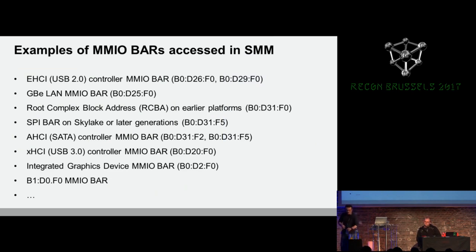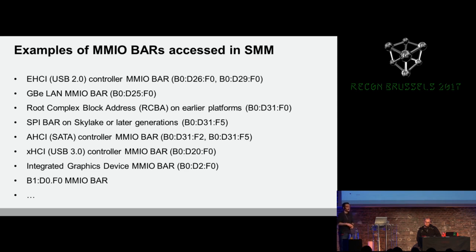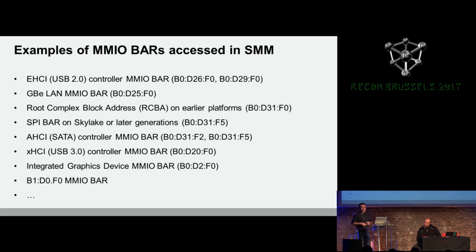What we've observed in multiple types of firmware, including UEFI and coreboot firmware, is that SMI handlers communicate with a lot of MMIO BARs. Examples include EHCI USB 2 BARs, Gigabit Ethernet LAN, root complex MMIO — that's the main MMIO for PCHs — or specifically SPI registers to communicate with the SPI flash. Also SATA controller MMIO, XHCI USB 3 controller, integrated graphics device MMIO — basically the GTT MMADDR range for the graphics device — and some other MMIOs like an LED controller on specific systems. This is what we've seen; there could be more depending on the specific system.